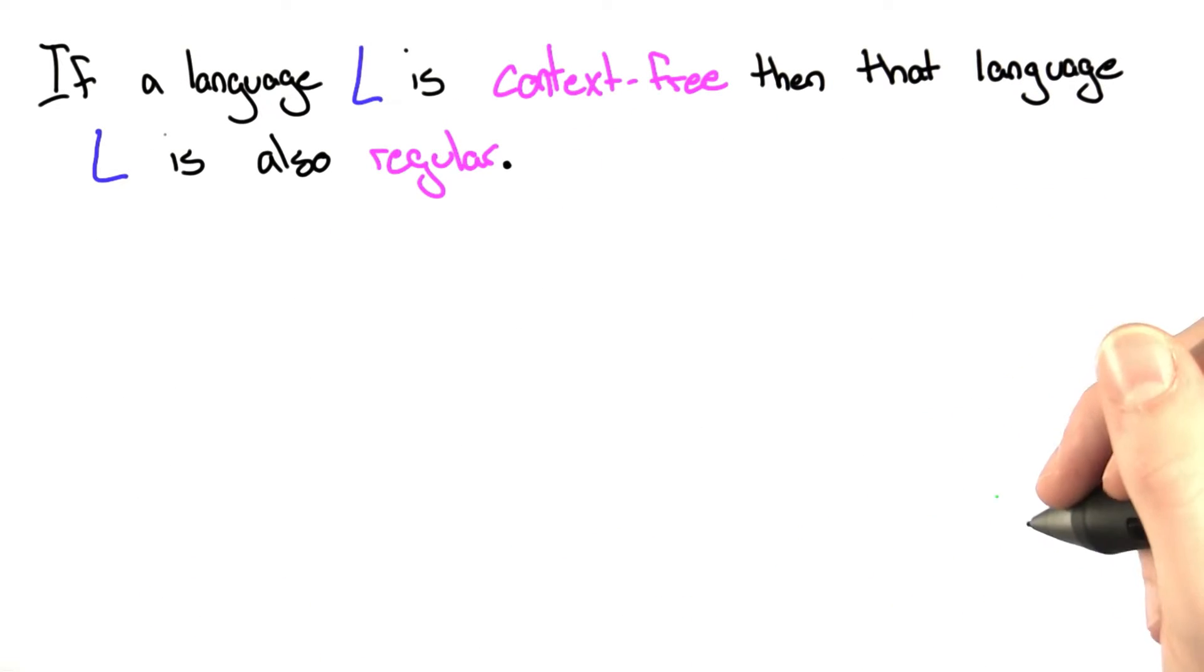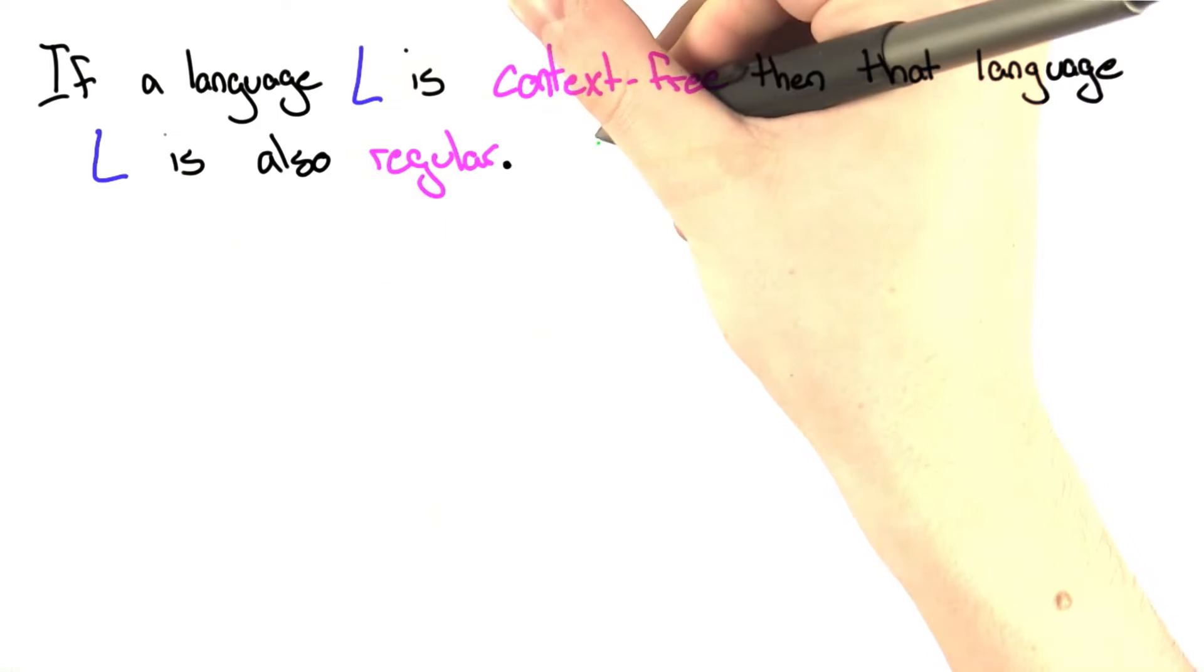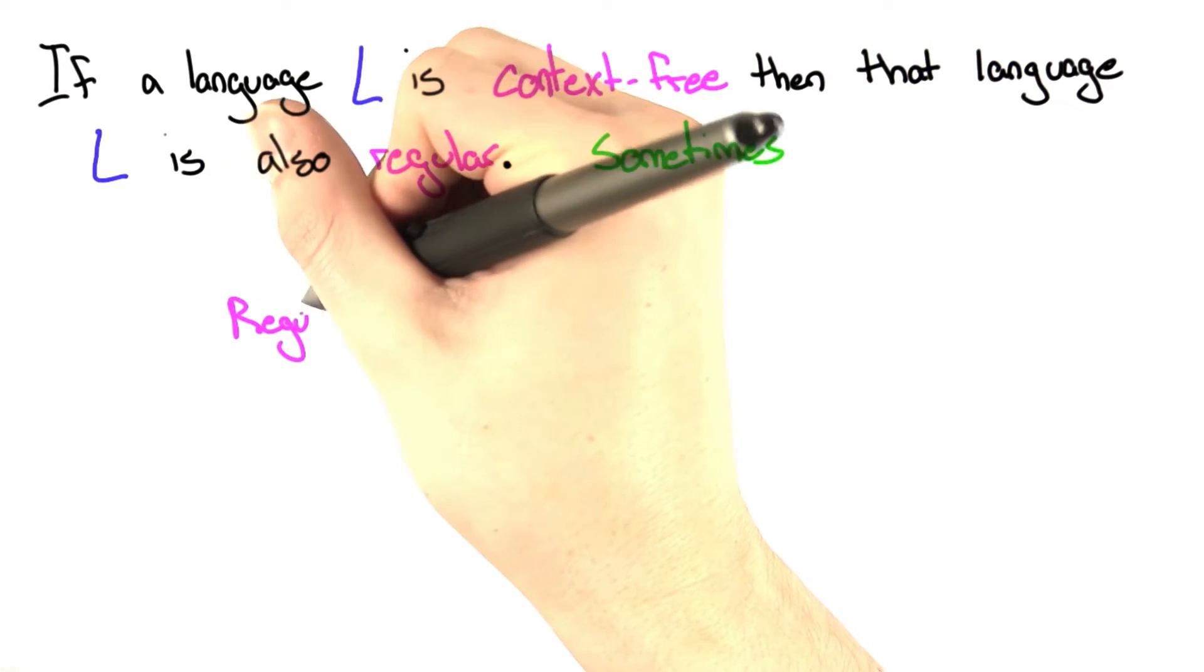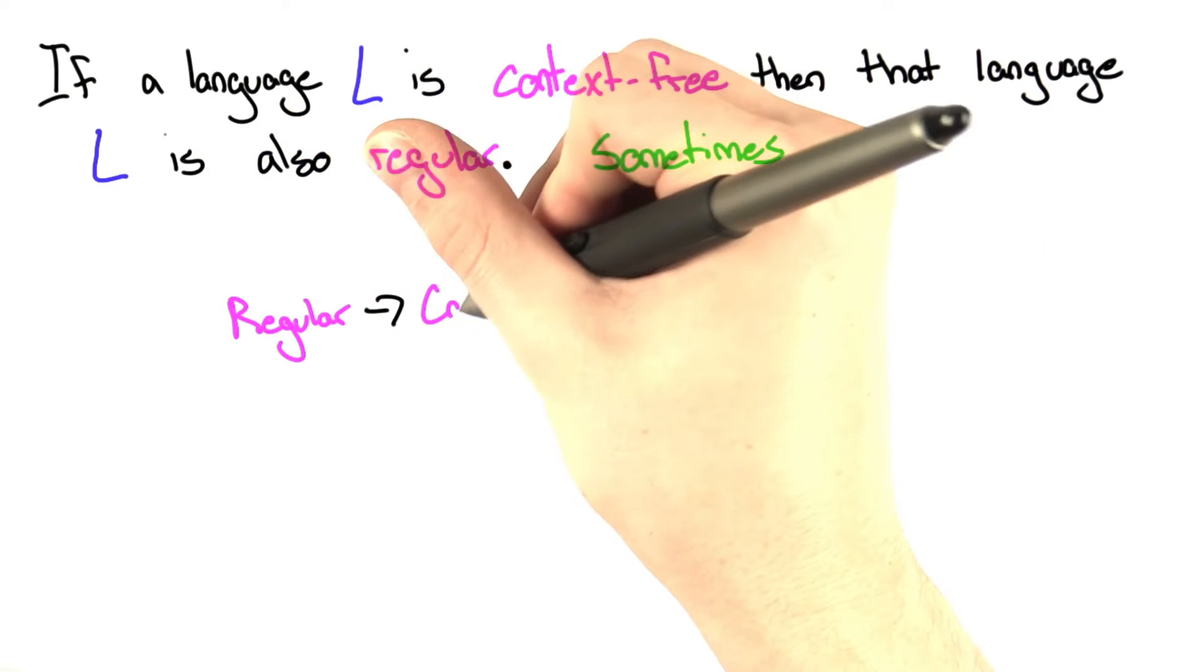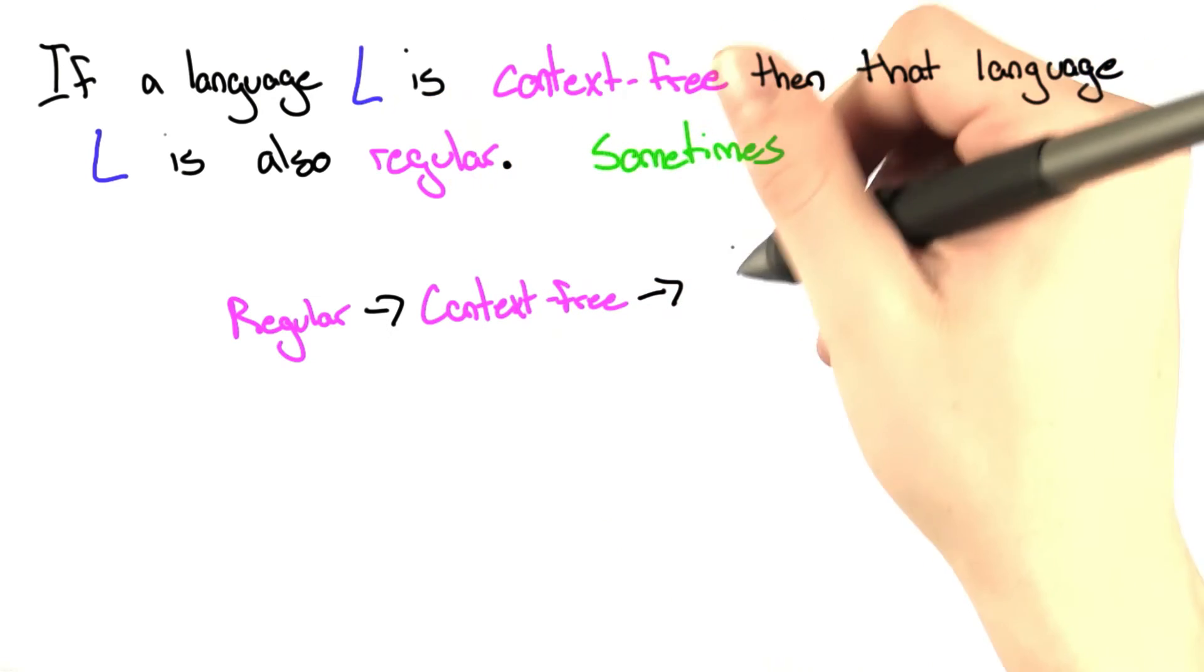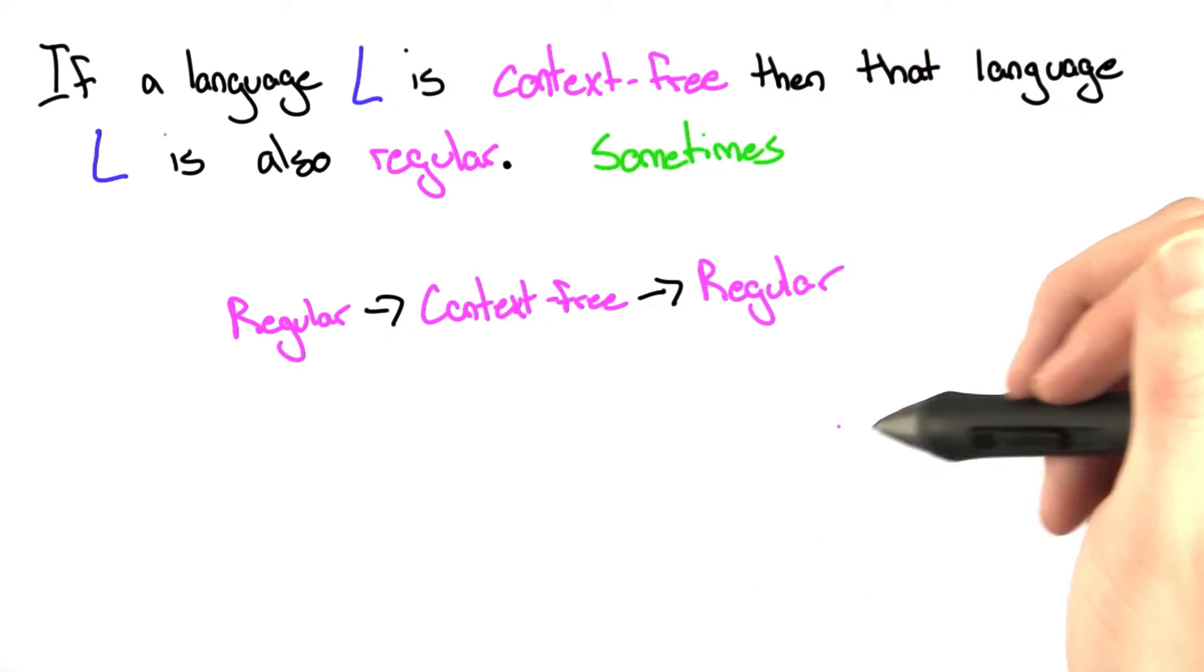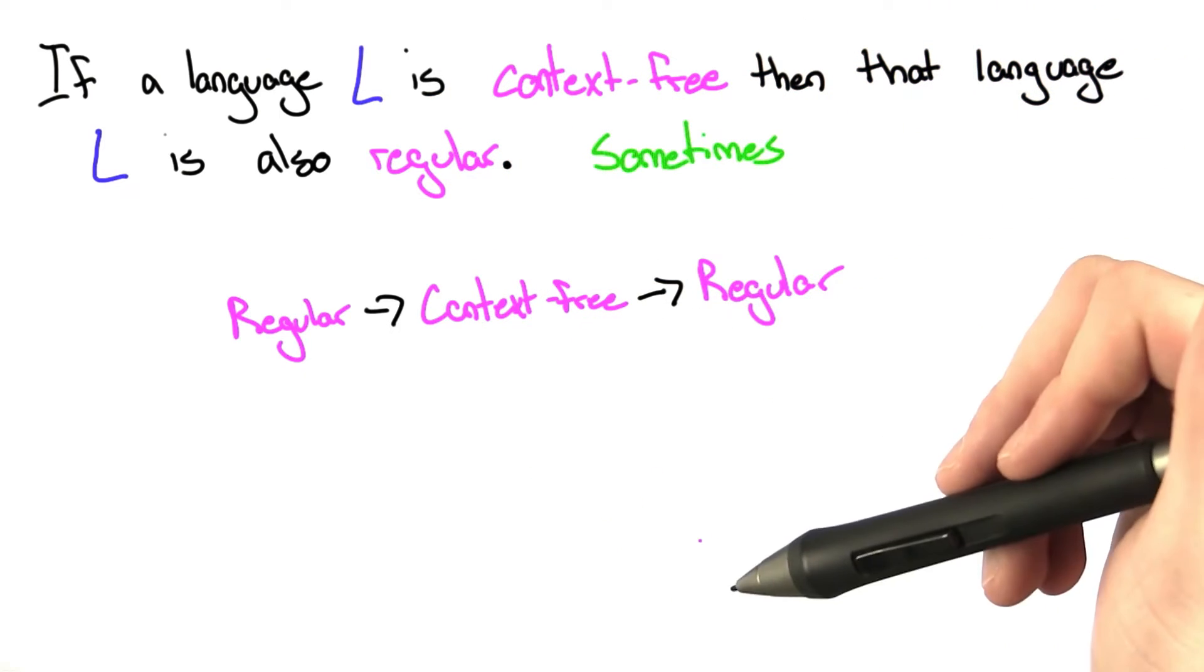If a language L is context-free, then that language L is also regular. This is sometimes true. If we have a regular language, that language is context-free, and it's also regular. So we have a case where sometimes a context-free language is regular.